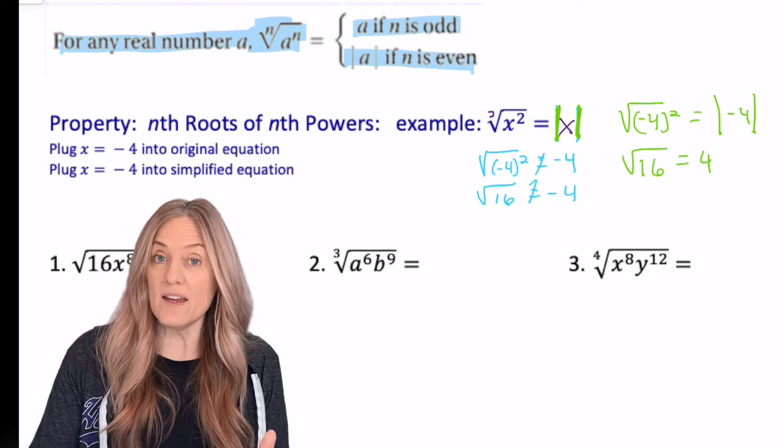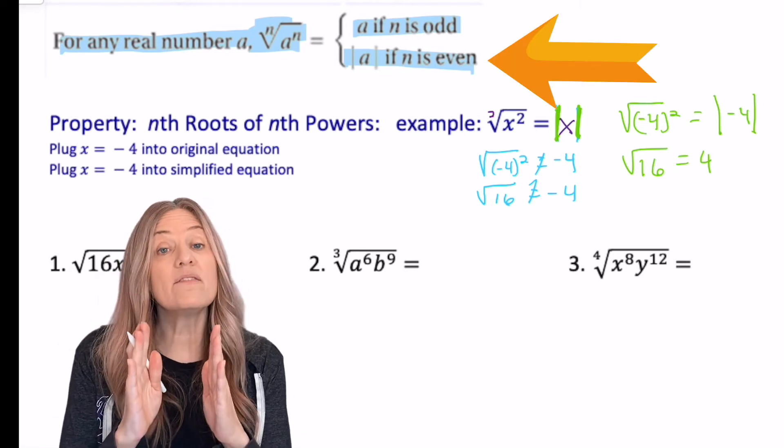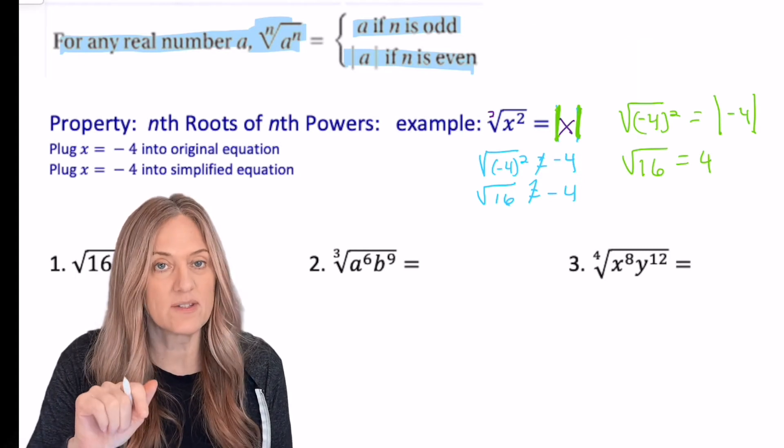That's why when we have even roots, we need to put the absolute value on the variable to make sure it stays a true statement.